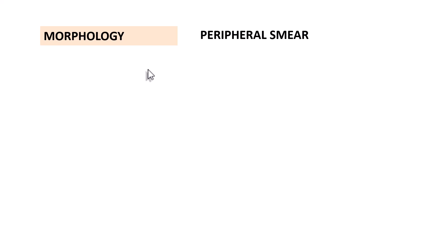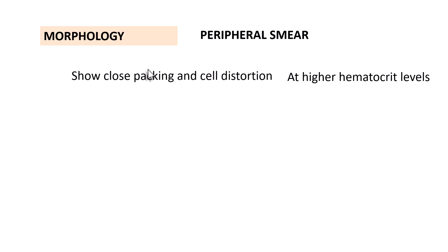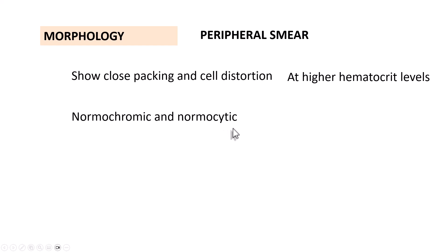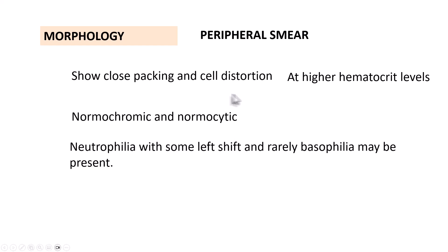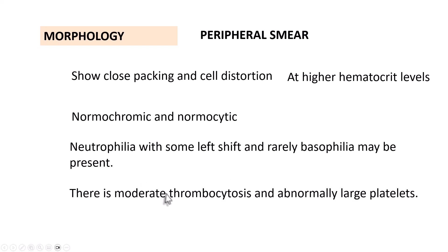Looking at the morphology of polycythemia vera in peripheral smear: as the hematocrit increases, the smear shows close packing and cell distortion. It is usually normocytic and normochromic, unless there is secondary iron deficiency causing a microcytic hypochromic picture. Neutrophilia is seen with some shift to the left, and basophilia is often present. There is a moderate amount of thrombocytosis with abnormally large platelets.